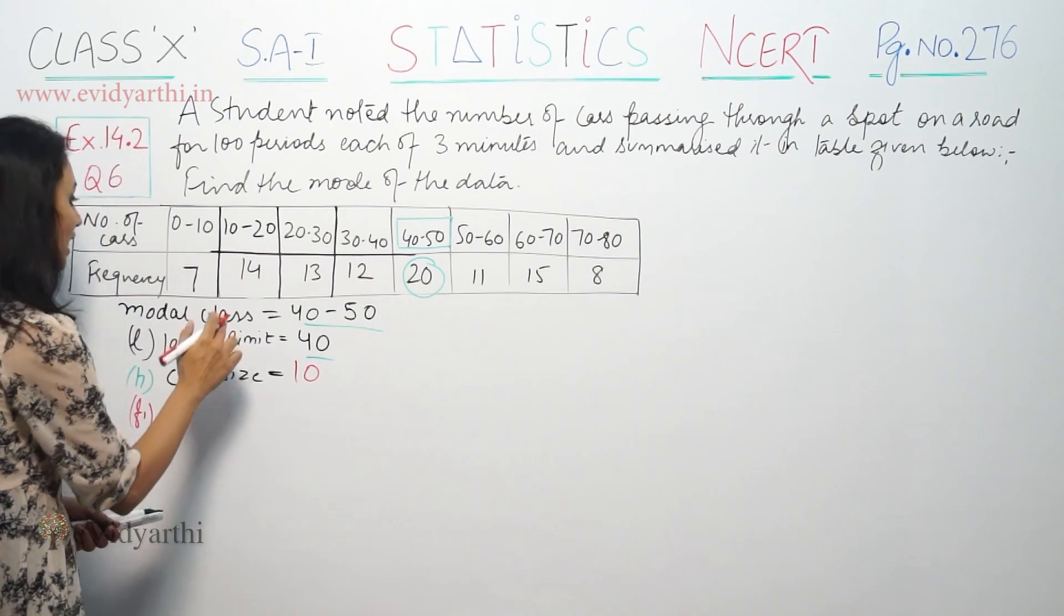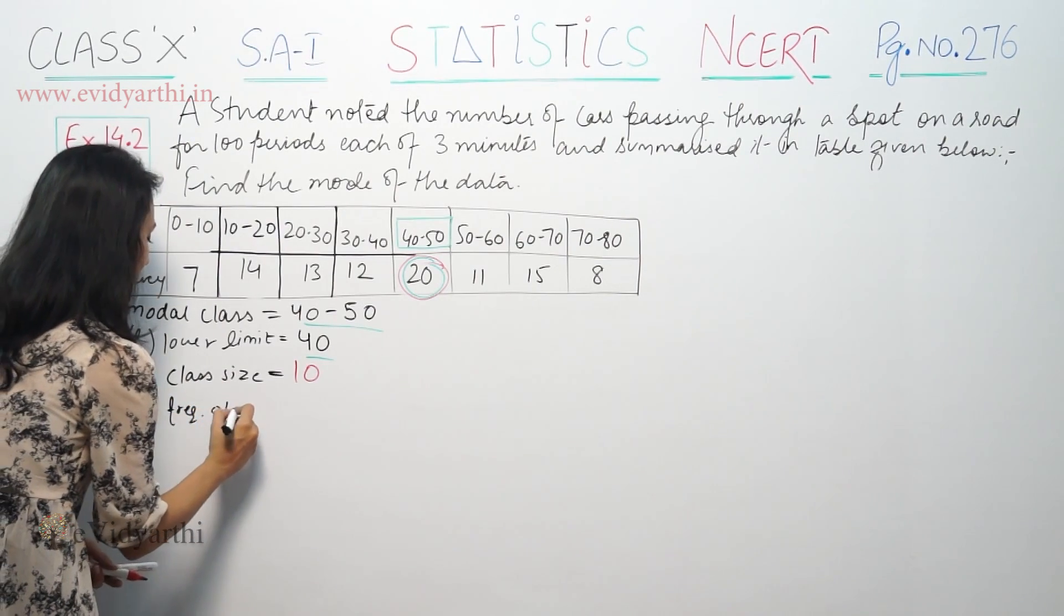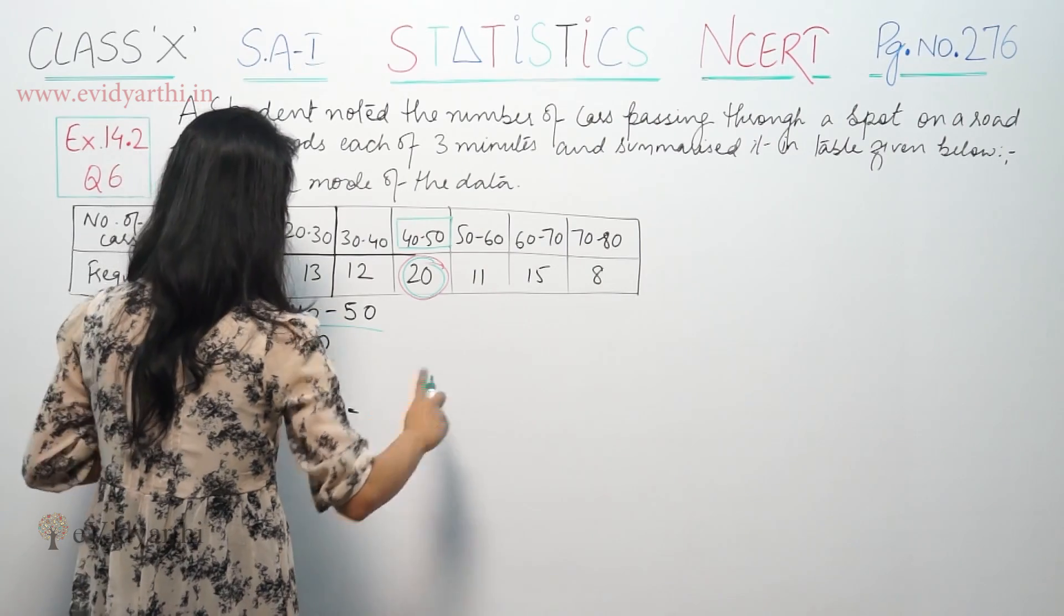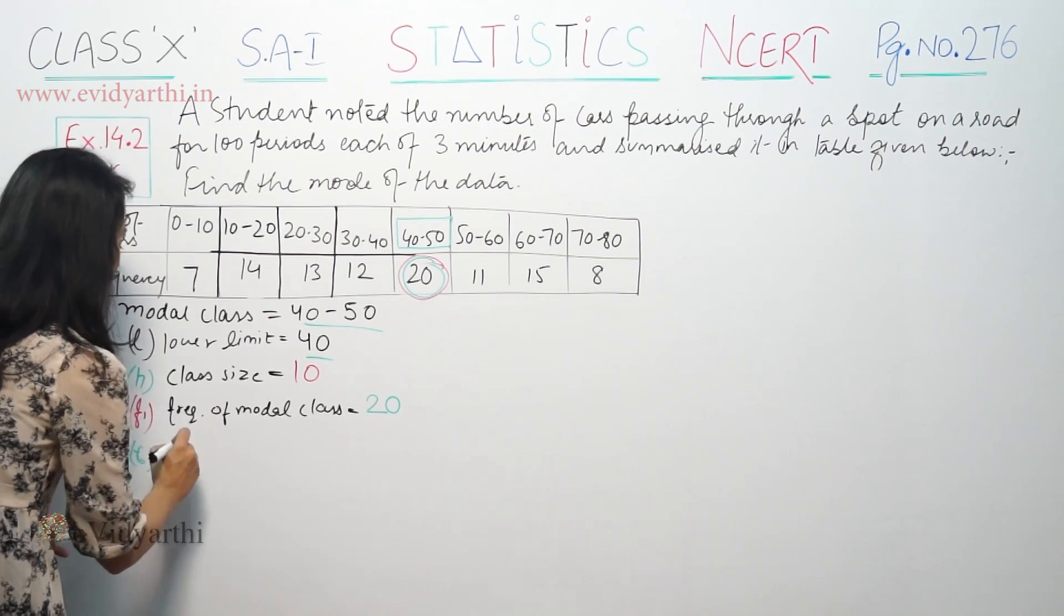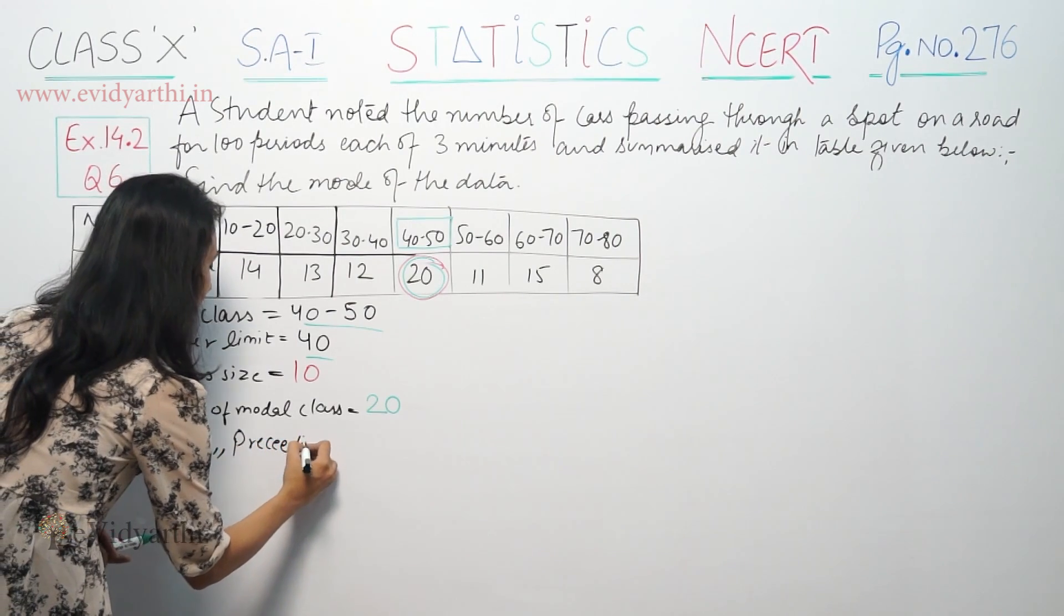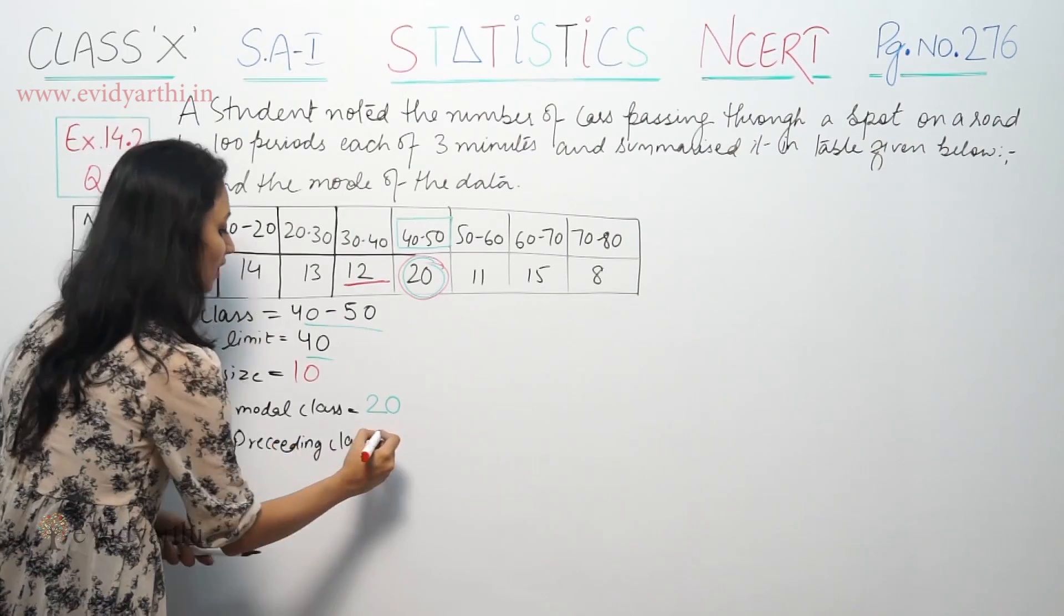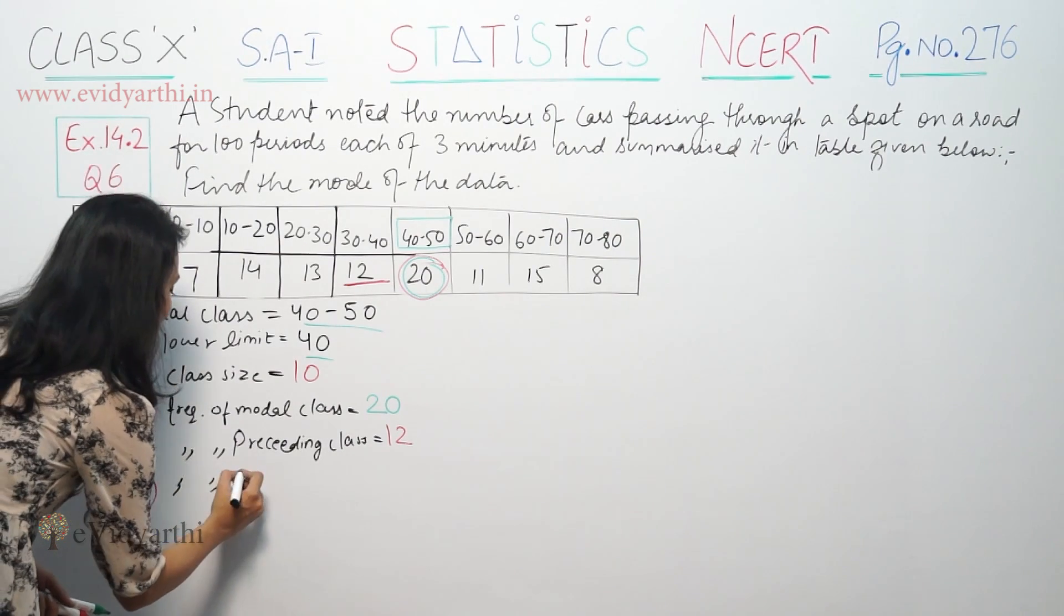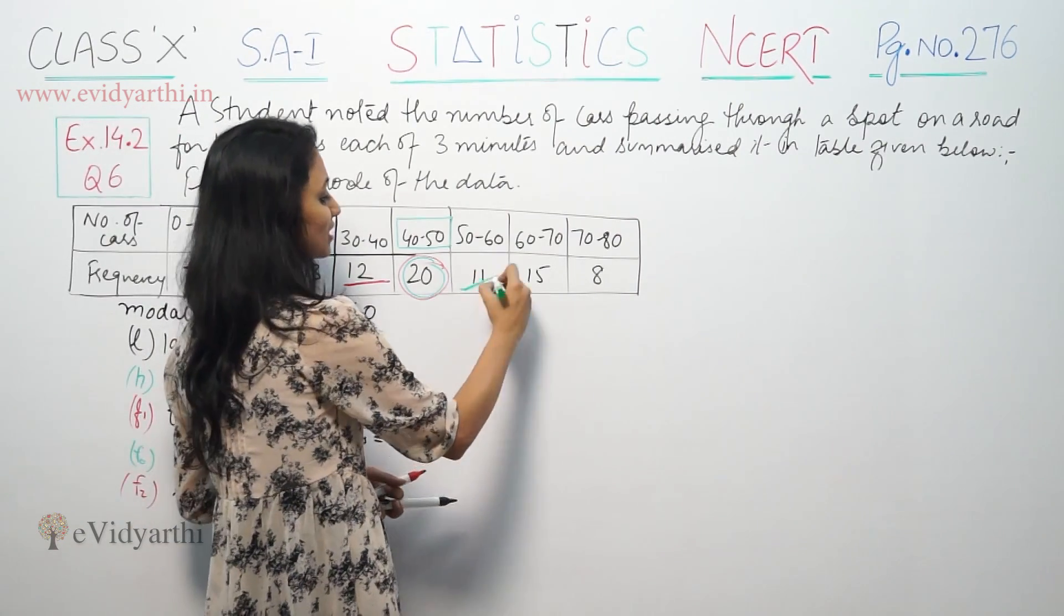This is frequency F1, which is 20. Then we have F0, frequency of preceding class. Preceding class is its first class frequency, so its first class frequency is 12. Now F2, F2 means frequency of succeeding class. Succeeding class means its first class frequency is 11.